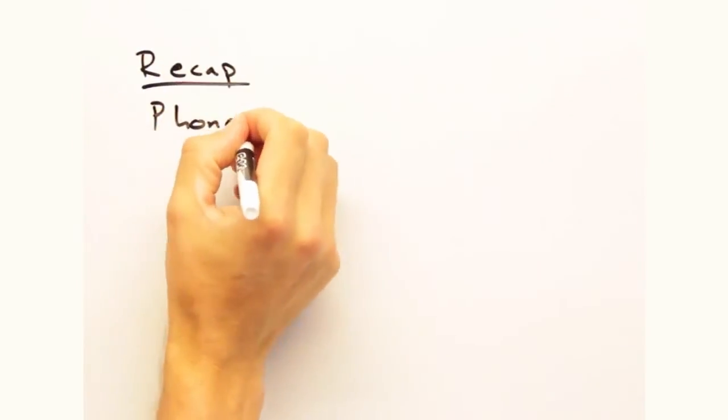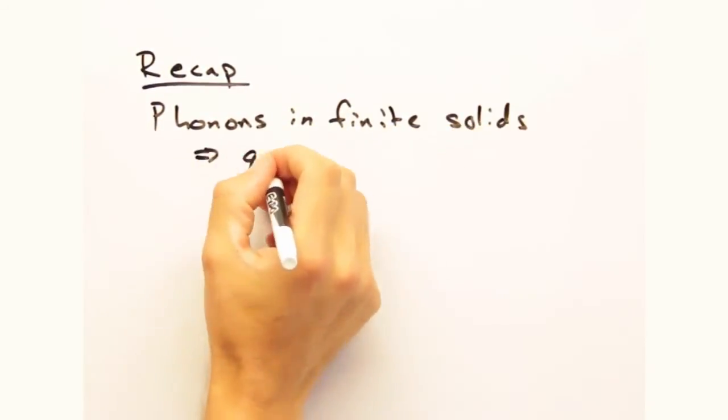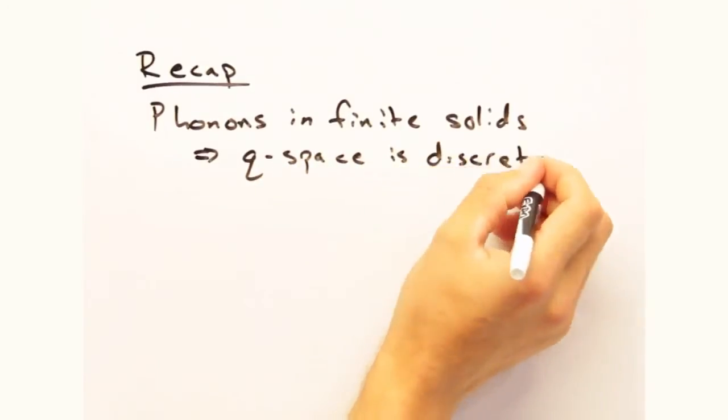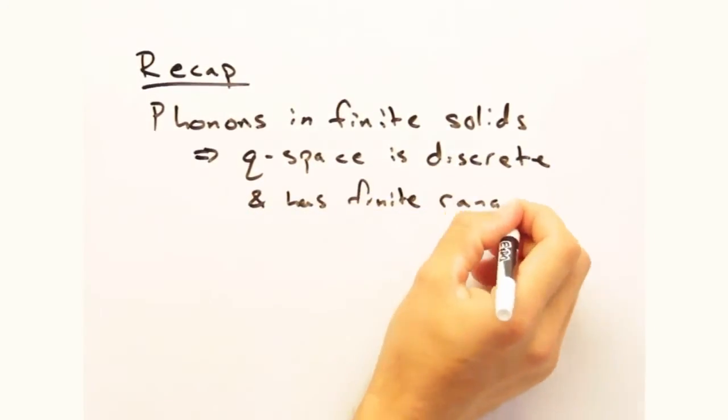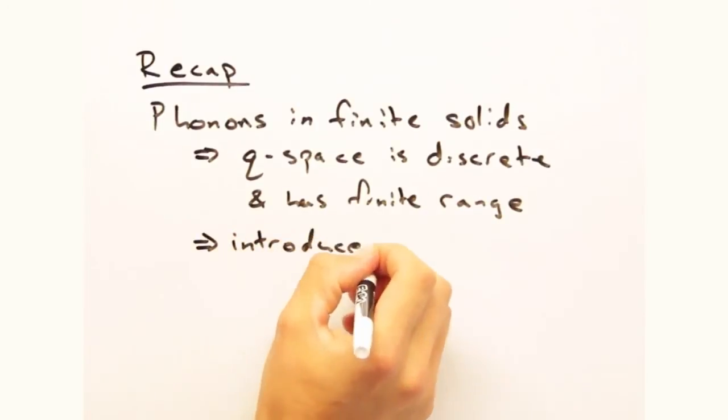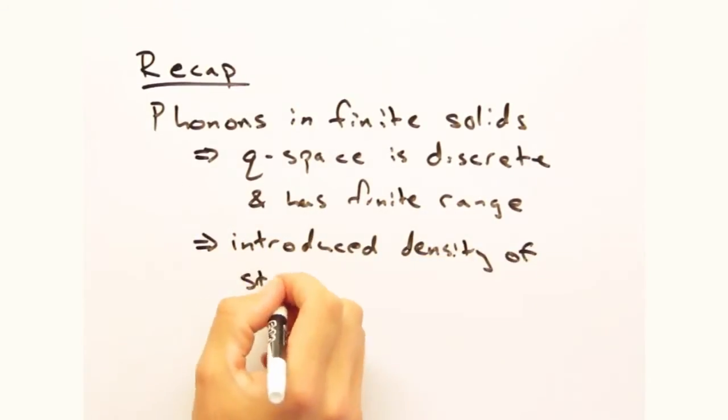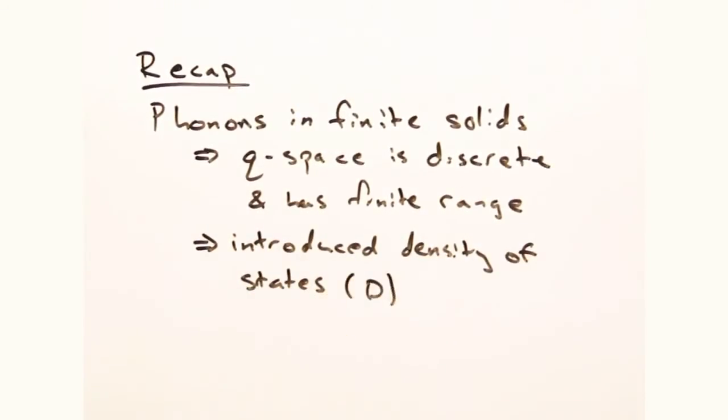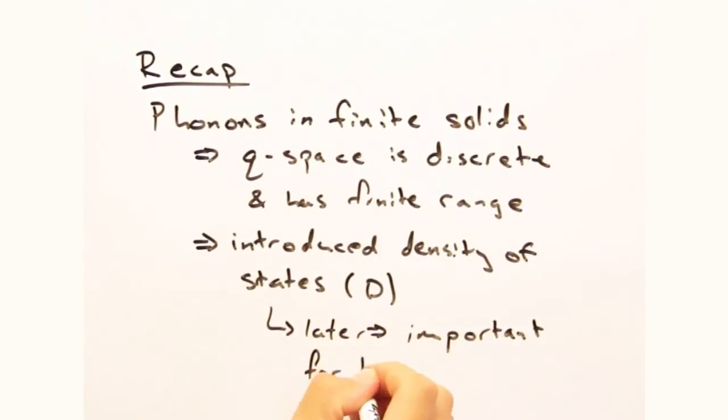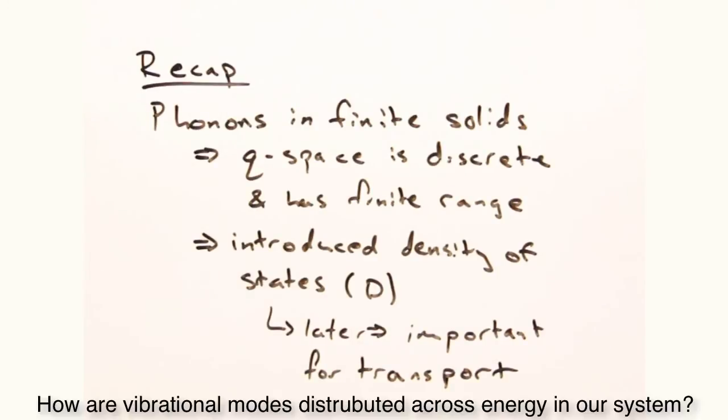Whew, we've covered a lot. Looks like a good time for a recap. Okay, so we've looked at finite solids and how q space is discrete and has a finite range. For this 1D case, the number of modes in a crystal is equal to the number of cells. The second thing we did was look at the density of states. Although we didn't touch on it today, the density of states is going to be an important factor later on in our discussion on transport. But for now, the takeaway message is that the density of states describes how vibrational modes are distributed in the energies of our system.